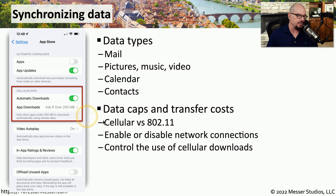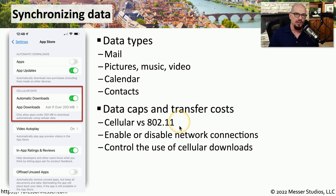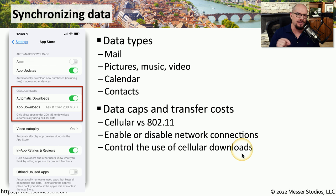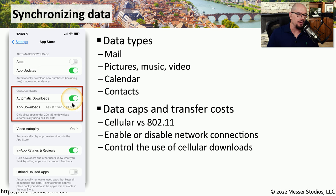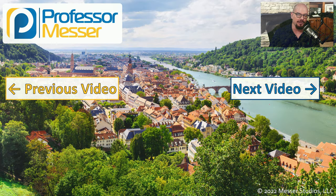For example, you can configure the system to allow cellular transfers or only allow transfers over faster 802.11 networks. You can also enable and disable different network connections, or control exactly how you download when you're on a cellular network. Cellular data can be set to automatically download or not download, and you can set exactly how much data can be transferred over that cellular network.